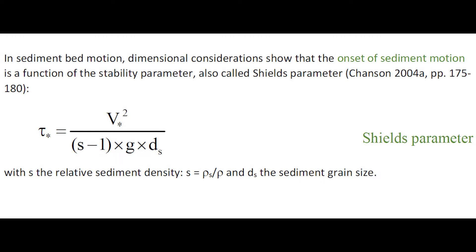In sediment motion, dimensional consideration shows that the onset of sediment motion is a function of the stability parameter, also called Shields parameter, which is related to the shear velocity.